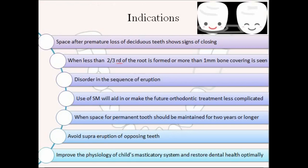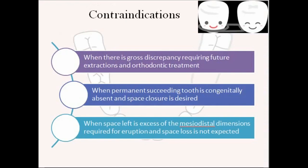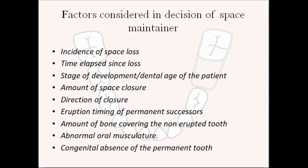Contraindications: when there's a gross discrepancy requiring future extractions or orthodontic treatment like serial extractions; when the permanent succeeding tooth is congenitally absent and space closure is desired; when there's no tooth for the space to be maintained for; and when the space left exceeds the mesiodistal dimensions required for eruption — meaning space loss is not expected, the leeway space is more, and the mesiodistal width of the tooth is less than the space already present.